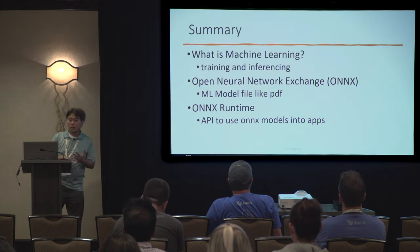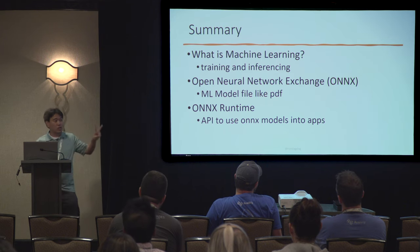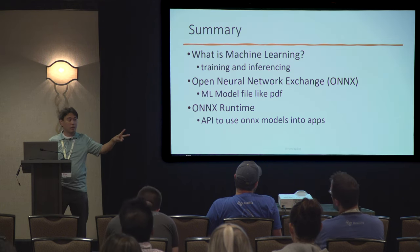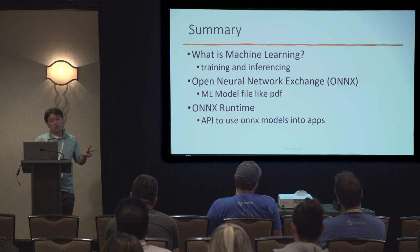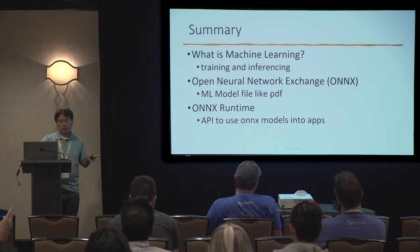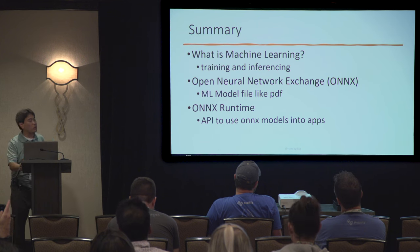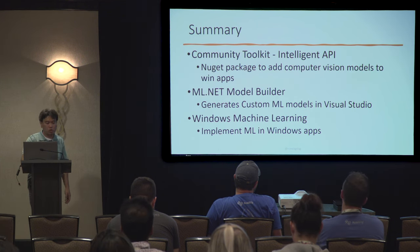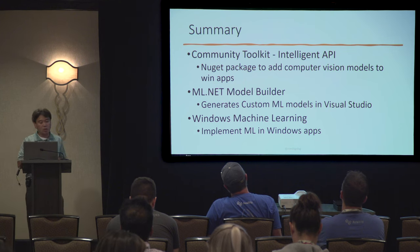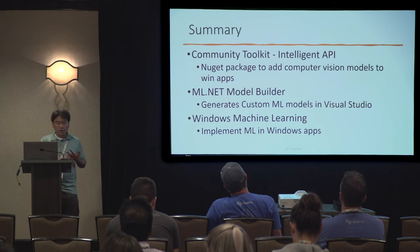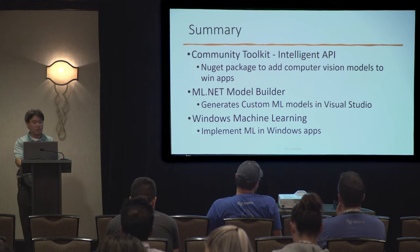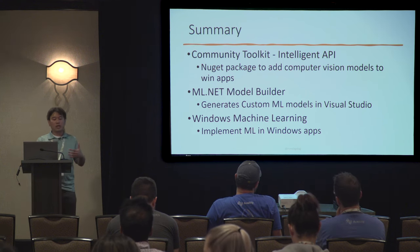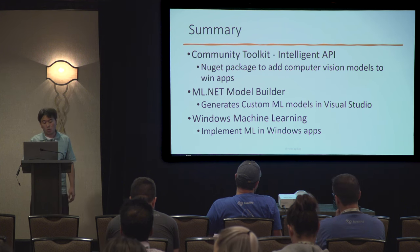In summary, what is machine learning? Two things to remember: training and inferencing — creating a model and then using that model. Open Neural Network Exchange is a model file like a PDF. ONNX Runtime is how you use an ONNX model to integrate it with your application. The Community Toolkit is an easier NuGet package way to add computer vision models to Windows apps. ML.NET Model Builder walks step-by-step to generate a custom model inside Visual Studio. Windows Machine Learning is implementing machine learning into your Windows application.